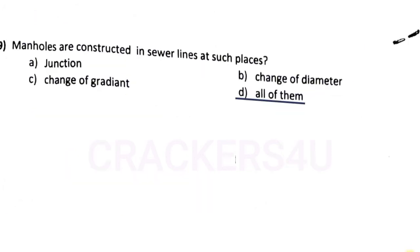Question number thirty-seven: manholes are constructed in sewer lines at such places — answer option D, all of them.